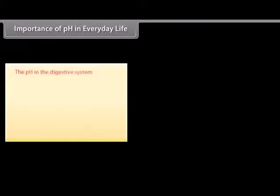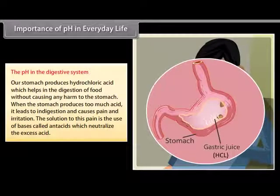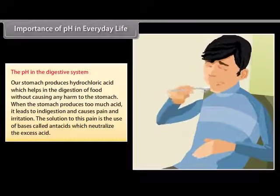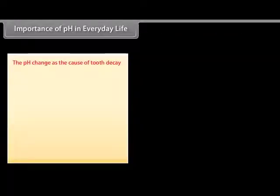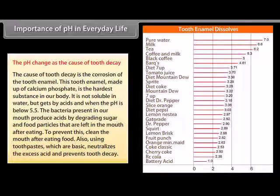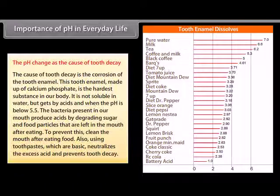Soil pH specifically affects plant nutrient availability by controlling the chemical forms of the nutrient. Our stomach produces hydrochloric acid which helps in the digestion of food without causing harm to the stomach. When the stomach produces too much acid, it leads to indigestion and causes pain and irritation. The solution is the use of bases called antacids, which neutralize the excess acid. The cause of tooth decay is the corrosion of tooth enamel. This enamel, made up of calcium phosphate, is the hardest substance in our body and is not soluble in water but gets corroded by acid when the pH is below 5.5. Bacteria in our mouth produce acids by degrading sugar and food particles. To prevent this, clean the mouth after eating and use toothpastes, which are basic, to neutralize the excess acid and prevent tooth decay.